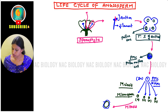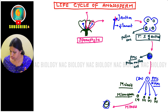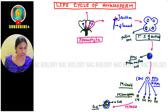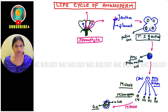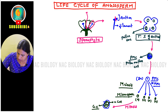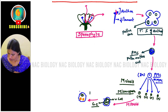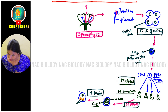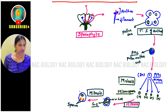Inside the pollen grain, there is one large cell called the vegetative cell (VC) and one more cell called the generative cell (GC). The generative cell gets converted into the male gametes — the sperms. Here mitosis occurs at this stage as well, producing two sperm cells. So we now have the male gametes from the stamen side.